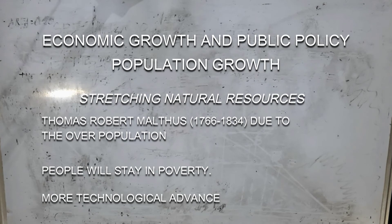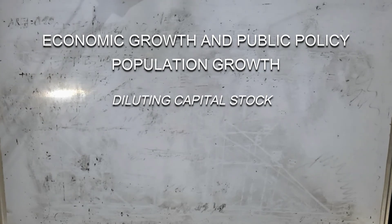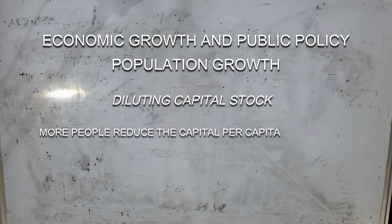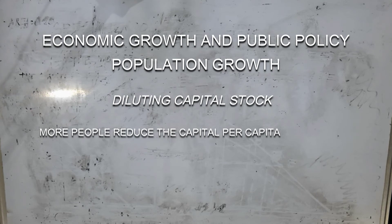Another concern is the effect of population on capital accumulation — diluting the capital stock. Some modern theories on economic growth emphasize this effect. According to these theories, population growth reduces GDP per worker because rapid growth in the number of workers forces the capital stock to be spread more thinly. In other words, if population growth is rapid, each worker is equipped with less capital. The smaller quantity of capital per worker leads to lower productivity and thus lower GDP per worker.